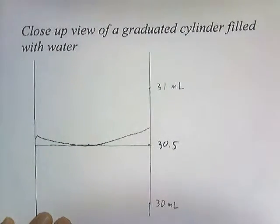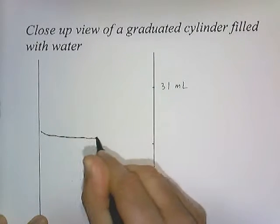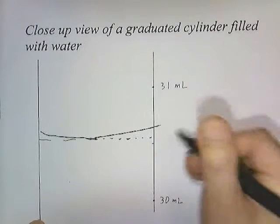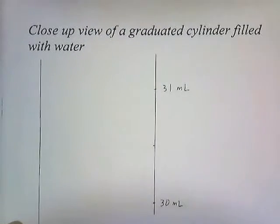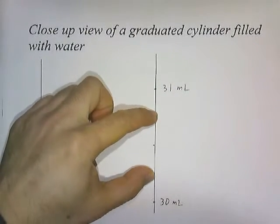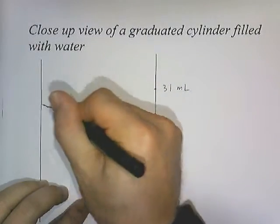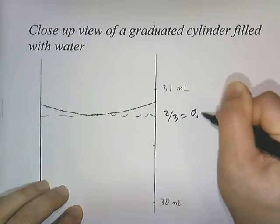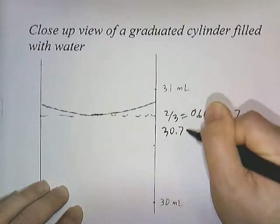If it was a little bit above the halfway point, we can estimate halfway pretty well. But if it's a little bit more than halfway, we'll call that 30.6 milliliters. How about 2 thirds? We can estimate 2 thirds pretty well. That's about 1 third, and that would be 2 thirds right here. This is 2 thirds of the way up. 2 thirds is the same as .66, so we'll round that to .7. We'll call this 30.7 milliliters.